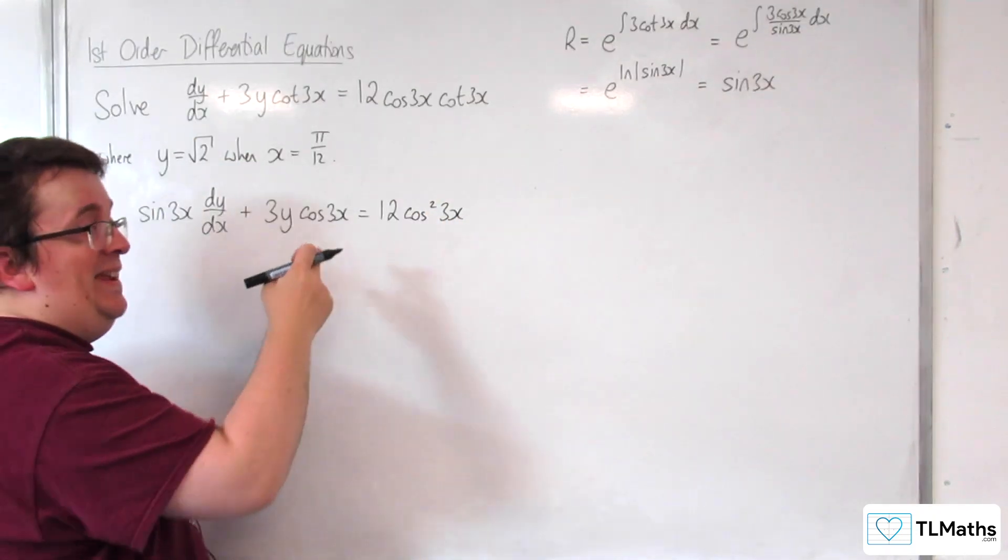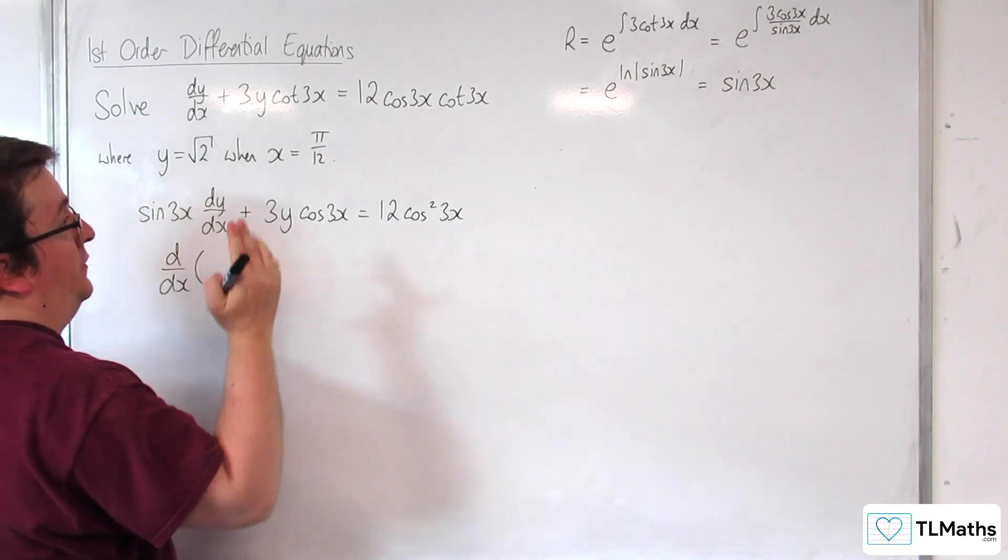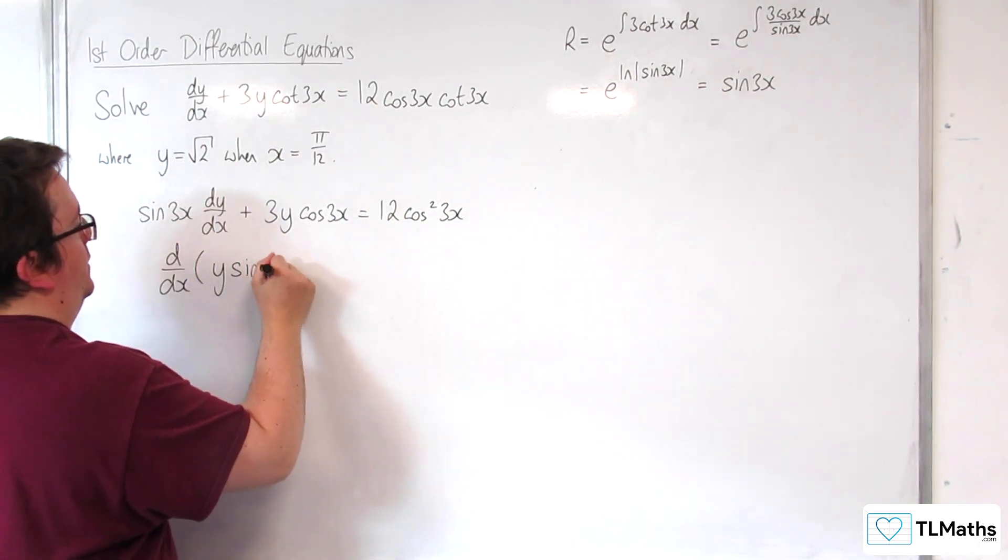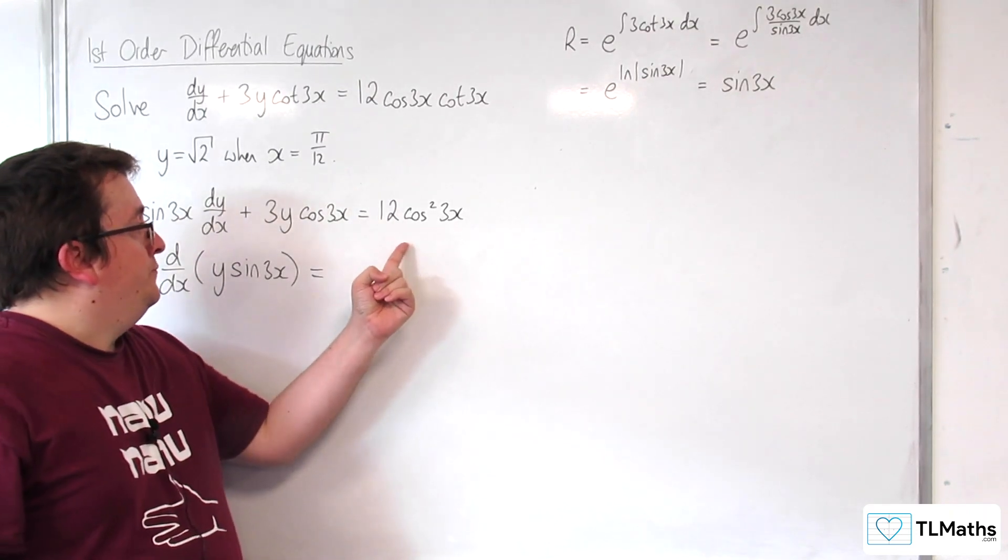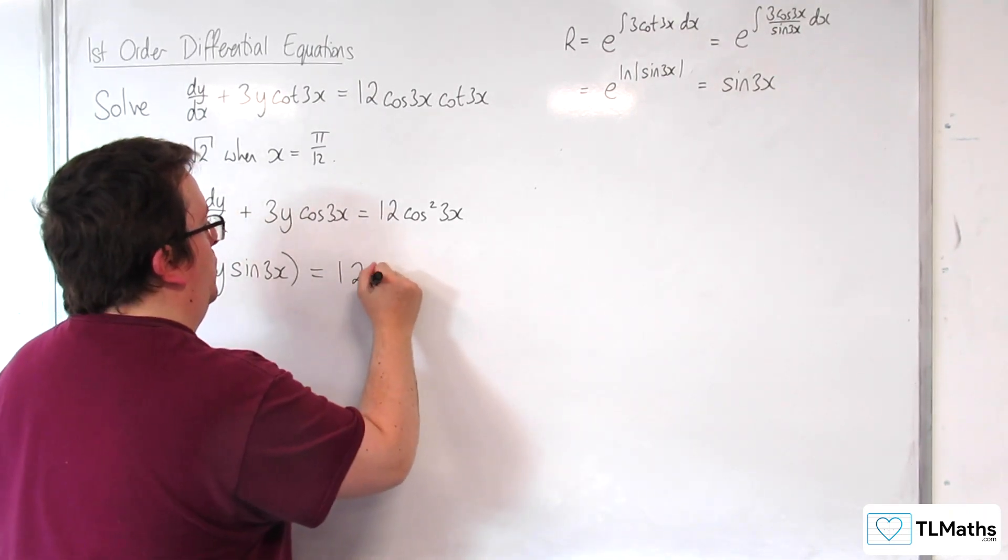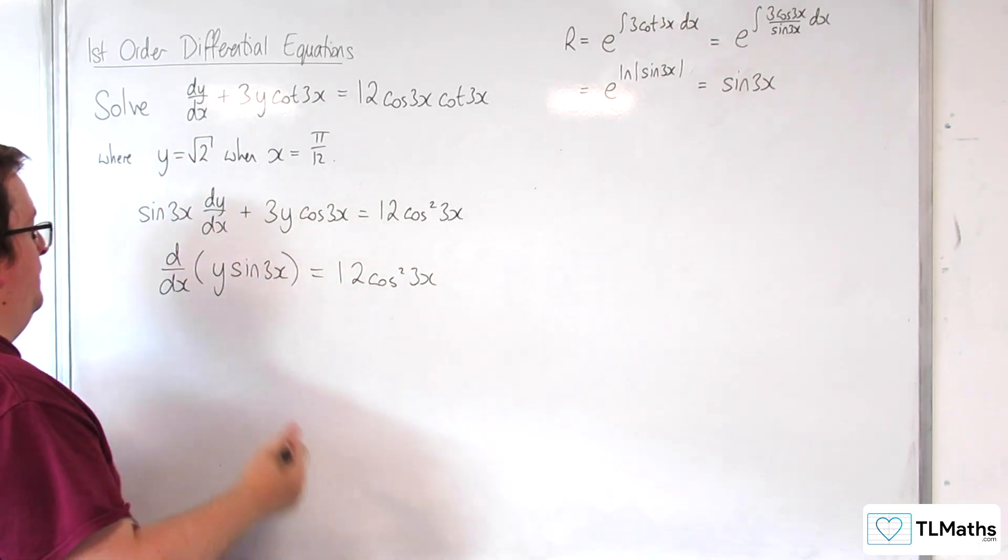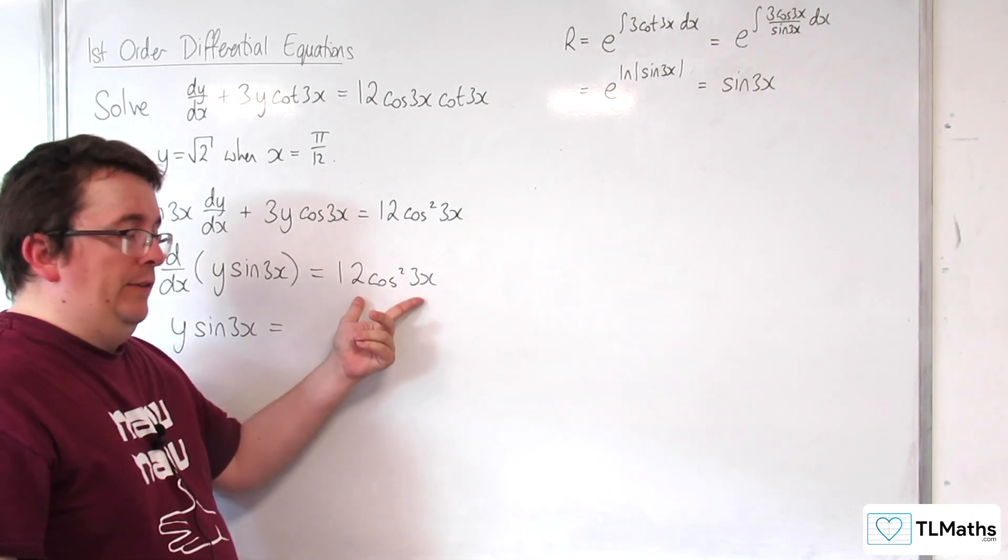Our left-hand side is now a perfect derivative. We can write that as d by dx of the integrating factor sine 3x times y, so I'll write it as y sine 3x. The right-hand side is this 12 cosine squared 3x, which we now need to integrate.